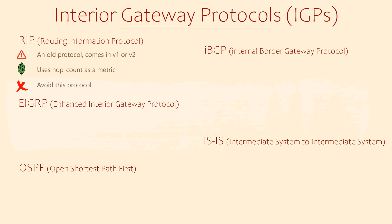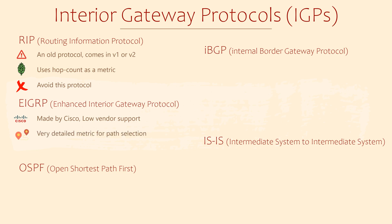One of the better options is EIGRP. Cisco designed EIGRP so it was originally for Cisco routers only — they then allowed other vendors to use it, but few have taken them up on the offer, so we still generally consider it Cisco only. It has a very detailed metric for measuring network paths, looking at things like bandwidth, delay, link reliability, and link load, then putting these values into an algorithm which creates the metric. It's also very easy to work with.